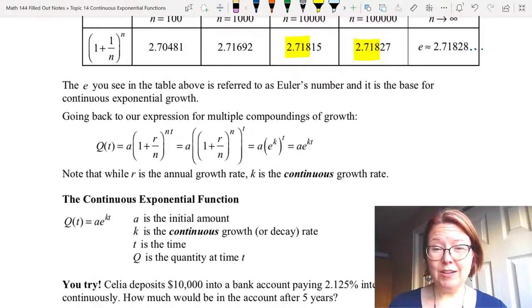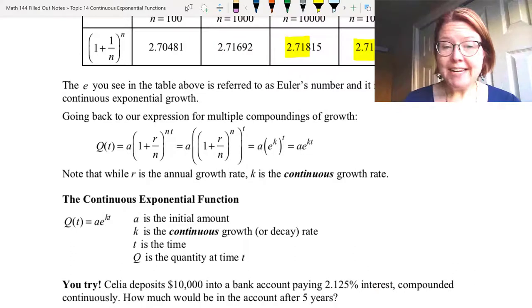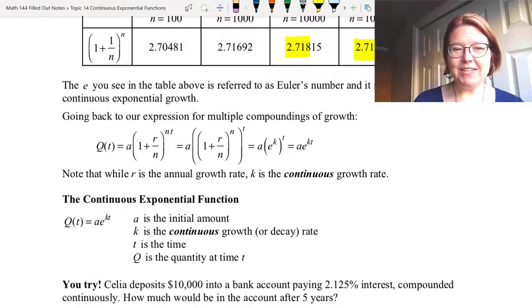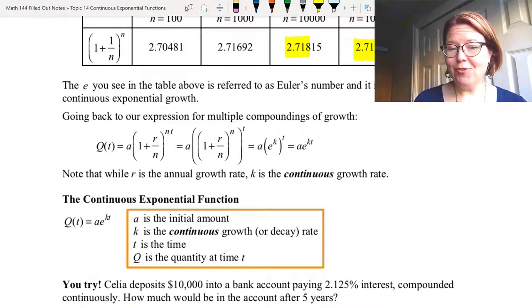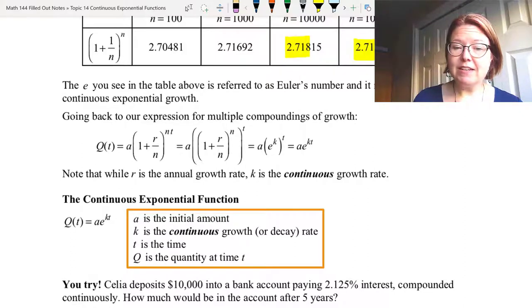The result is lowercase a times lowercase e raised to the k times t. Now we have two growth rates in this equation. We have lowercase r, that's the annual growth rate with compoundings annually. And we have lowercase k, that's the continuous growth rate. Those are not the same number. So our continuous exponential function: Q(t) = ae^(kt). Lowercase a is the initial amount. Lowercase k is the continuous growth or decay rate. Lowercase t is the time. And capital Q is the quantity at time t.